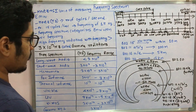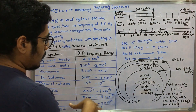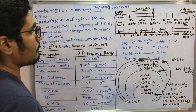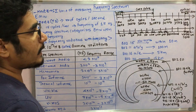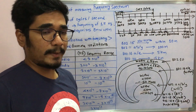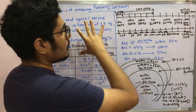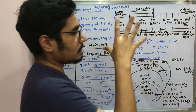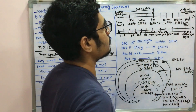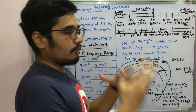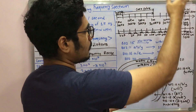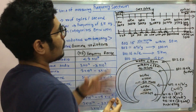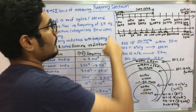Gamma rays are extremely harmful and fall in the frequency range of 3×10^19 hertz and above. Moving on, we have the frequency spectrum laid out for wireless systems. For transmitting data you have twisted pair cables, coaxial cables, and optical transmission, each operating within specific ranges.